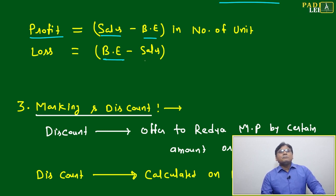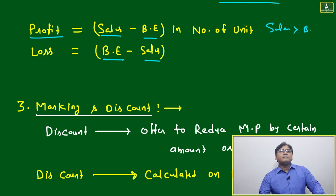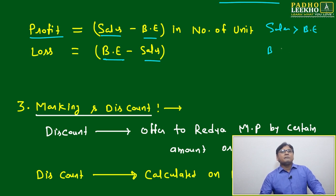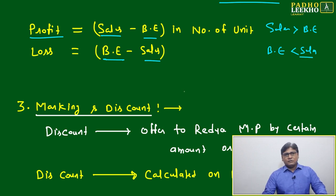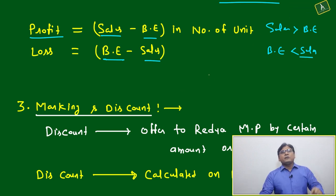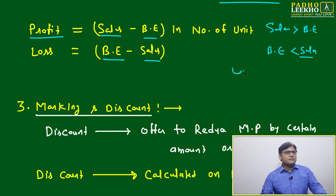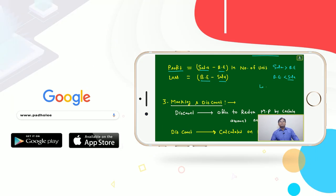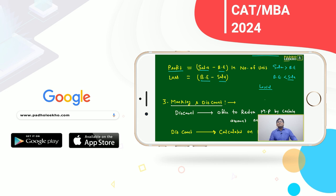For loss: if break-even is greater than sales, you make a loss. If sales are greater than break-even, you make a profit. Based on this simple relation, you will find logical questions on profit and loss. Be especially careful with data sufficiency questions — they will check this: if sales increase beyond break-even, how much should it increase.